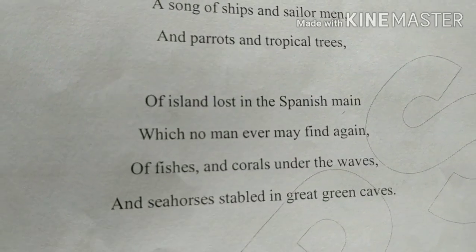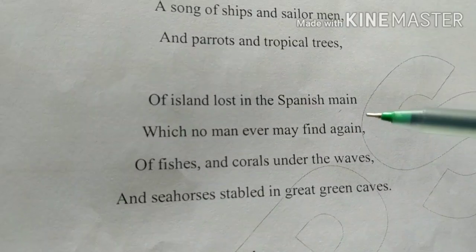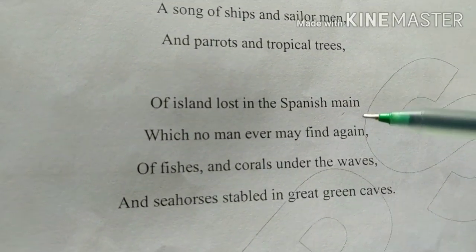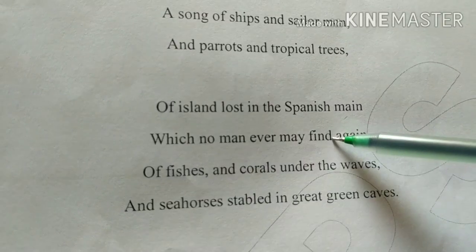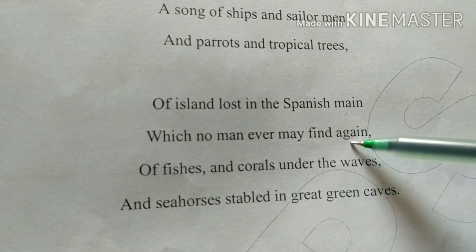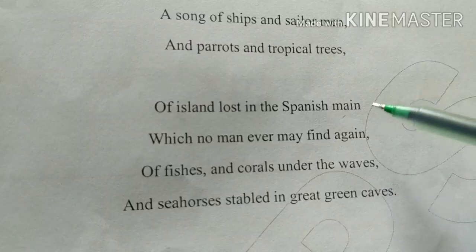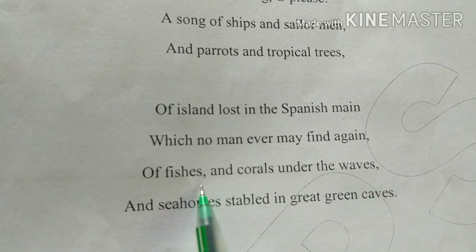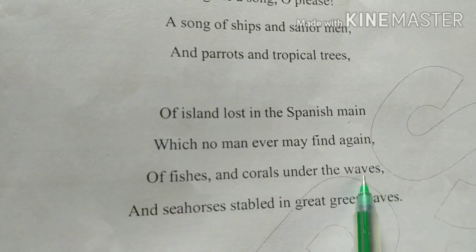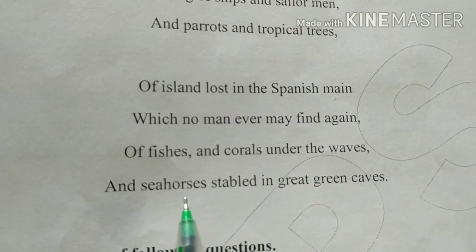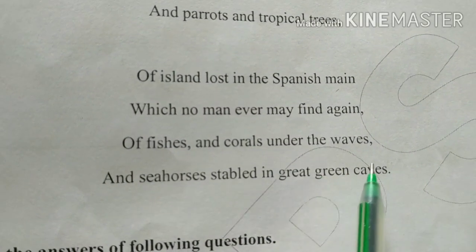The poet asks the seashell to sing about the corals and fishes under the waves, and the seahorses that are stabled in those great green caves.